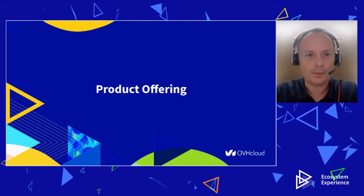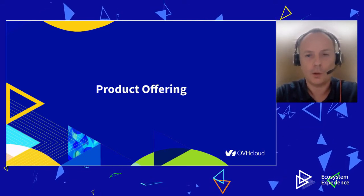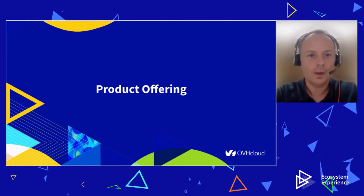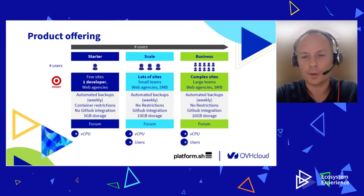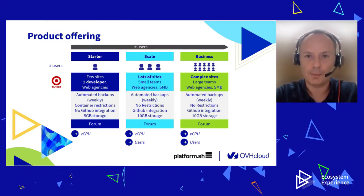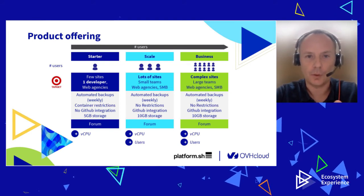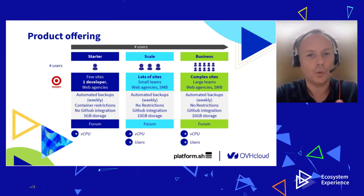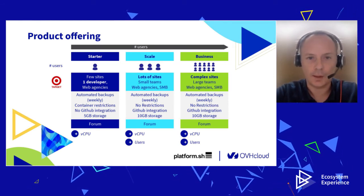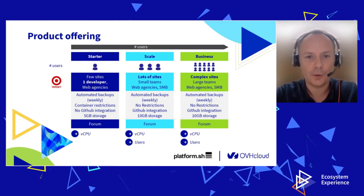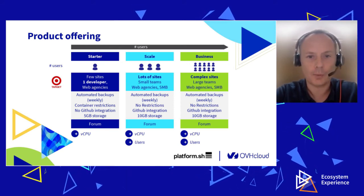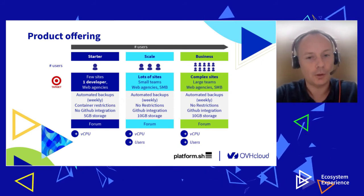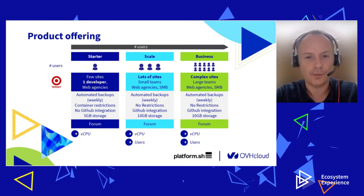After this product demonstration by Robert, let's see the product offering and how OVH and Platform.sh have built together this nice product. In the next weeks, we will launch a new product called WebPath, and it will be split in three parts. The first part is the starter offer. The starter is mainly for one user, someone who wants to develop a few sites, targeting freelance and small agencies. In this offer, you will get automated backups, some container restrictions, with single app and single service, no GitHub connection but a Git integration, and five gigabytes of storage.